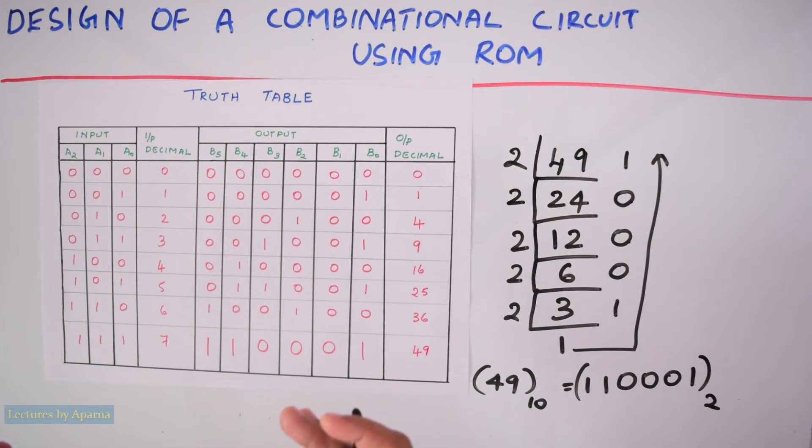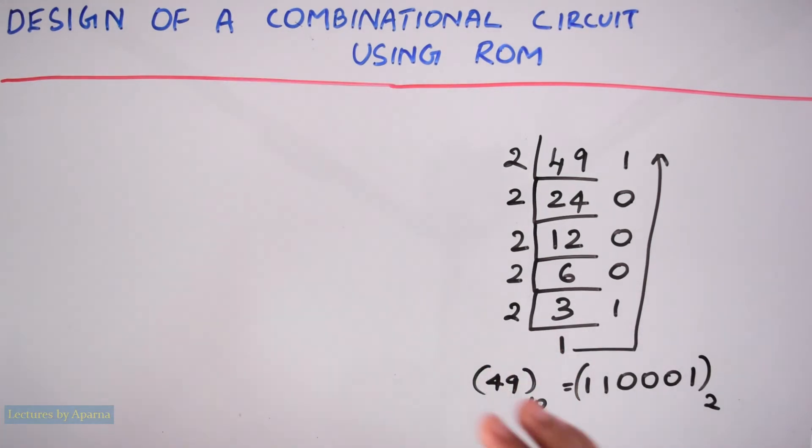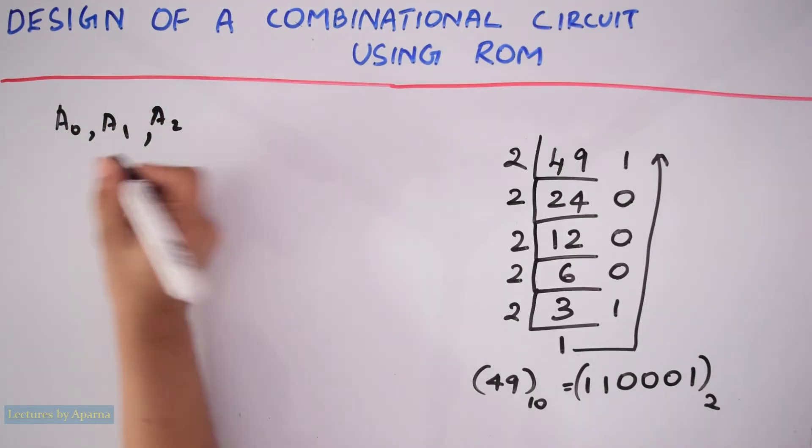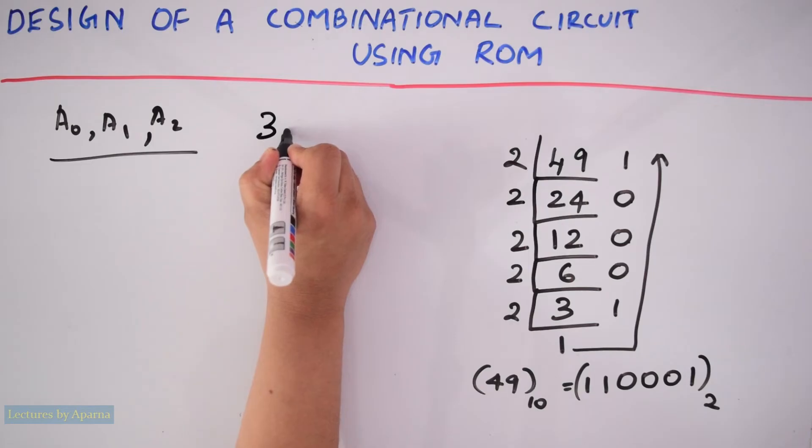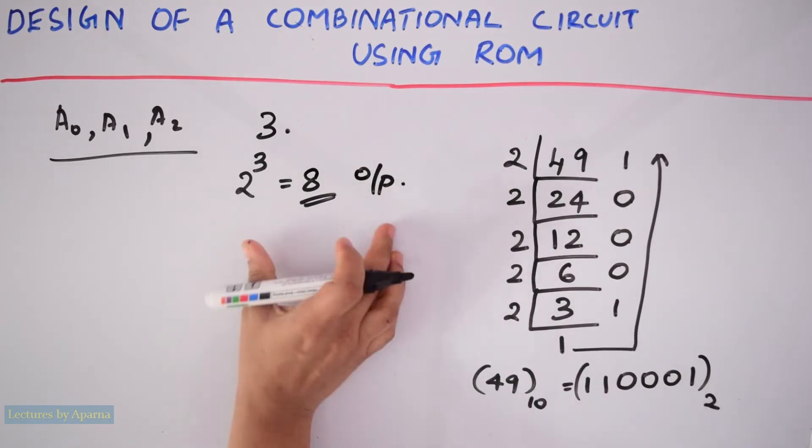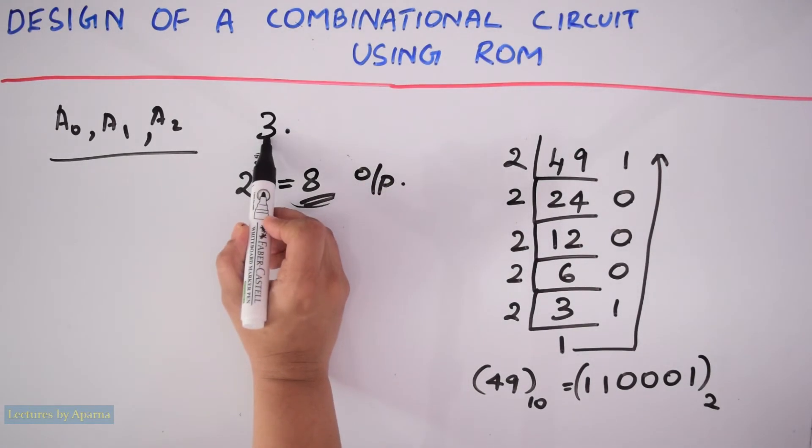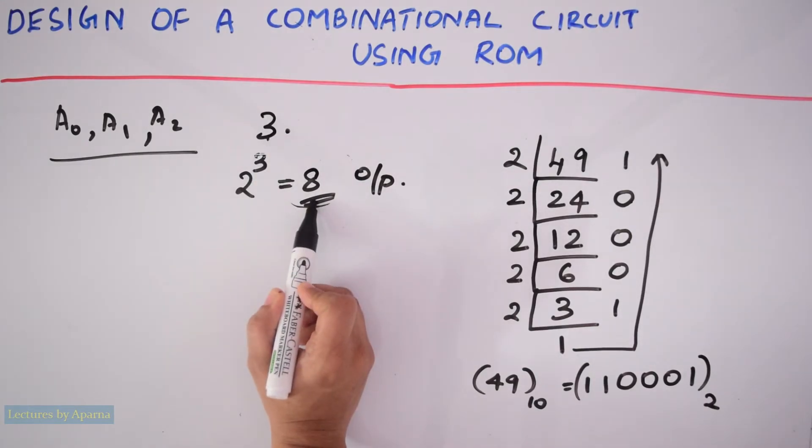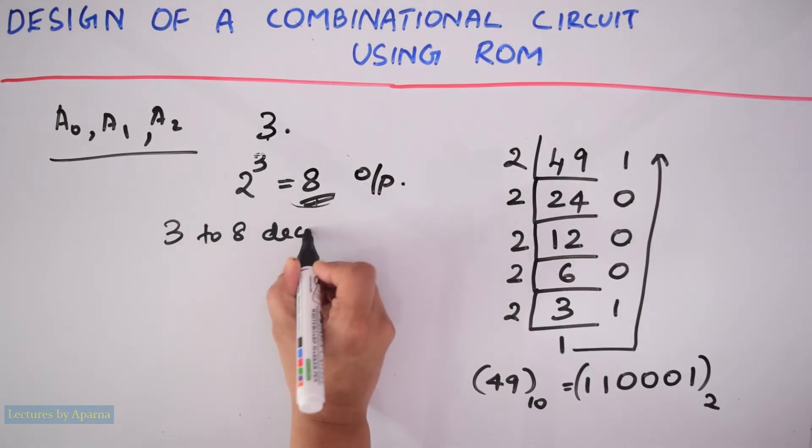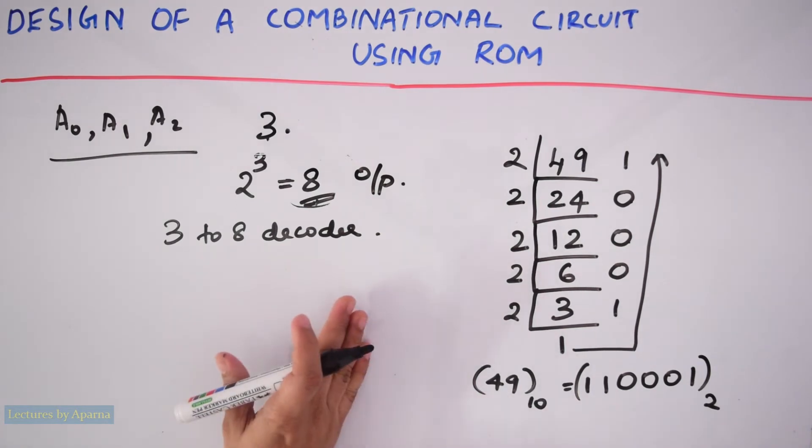A ROM consists of a decoder followed by an OR array. If you want to know about ROM in detail, I have made a video on it. I will put its link in the description box. To the decoder, we have to give 3 inputs: A0, A1, and A2. So at the output, there will be 2 raised to 3, that is 8 outputs for the decoder. So it is a 3-to-8 decoder.